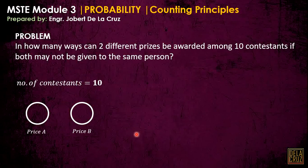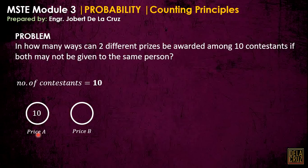How do we solve it? For Prize A, initially we have ten contestants, meaning Prize A has ten possible ways — either contestant one, two, three, or up to contestant ten. For Prize B, since one contestant already won Prize A, the possible ways for Prize B is nine, since that one person cannot win two prizes.